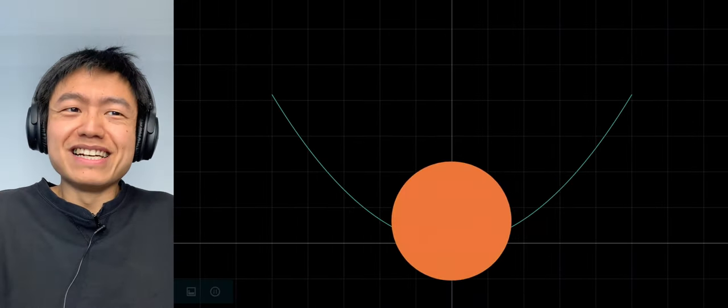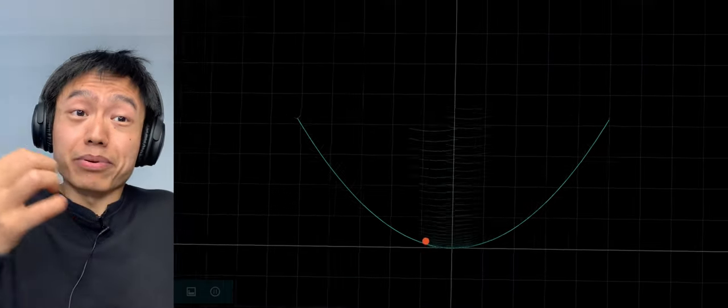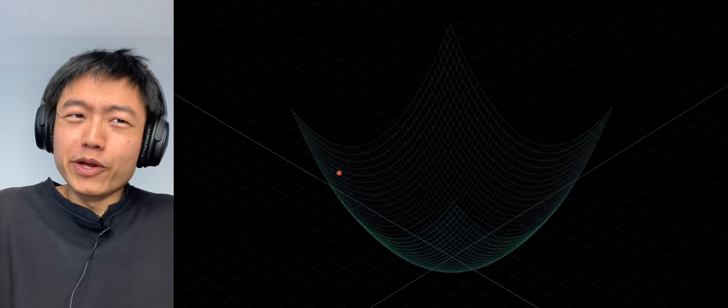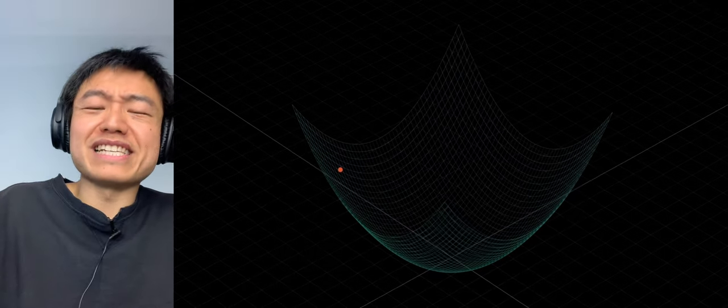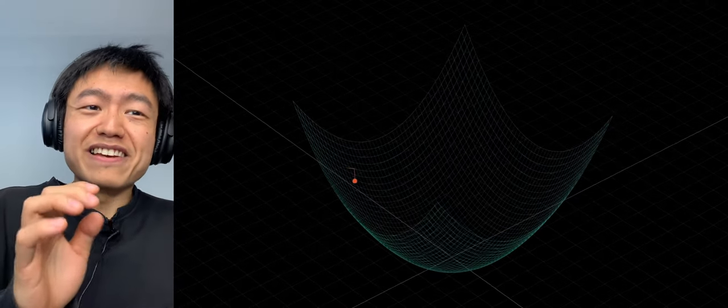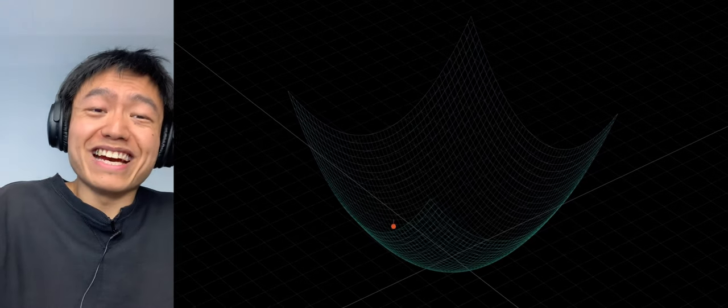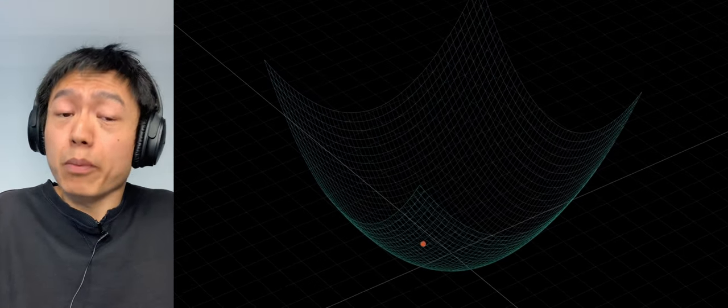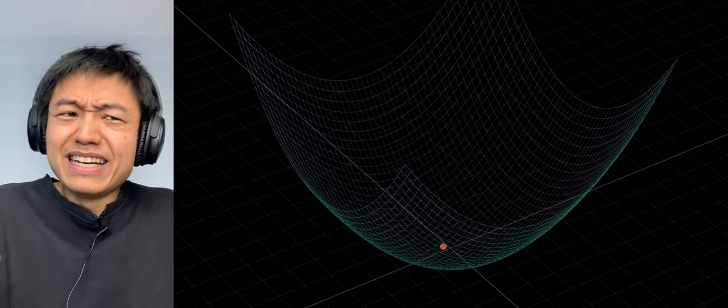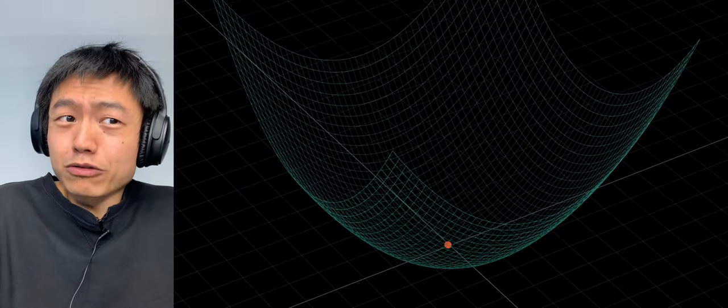If we add variables, let's say z equals x squared plus y squared, then we can get a three-dimensional image like this. Now, this point needs to automatically adjust x and y to the lowest point on the z axis. Isn't it a bit like going down the hill?